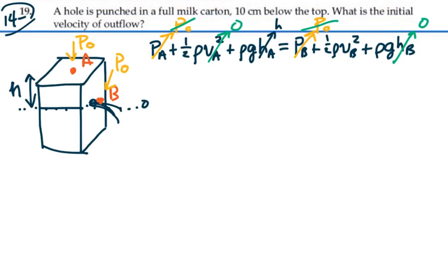So what we have left is P₀ plus ρgh equals P₀ plus one half ρ velocity of B squared. And as we said, the P₀ terms will cancel out for the absolute pressure.